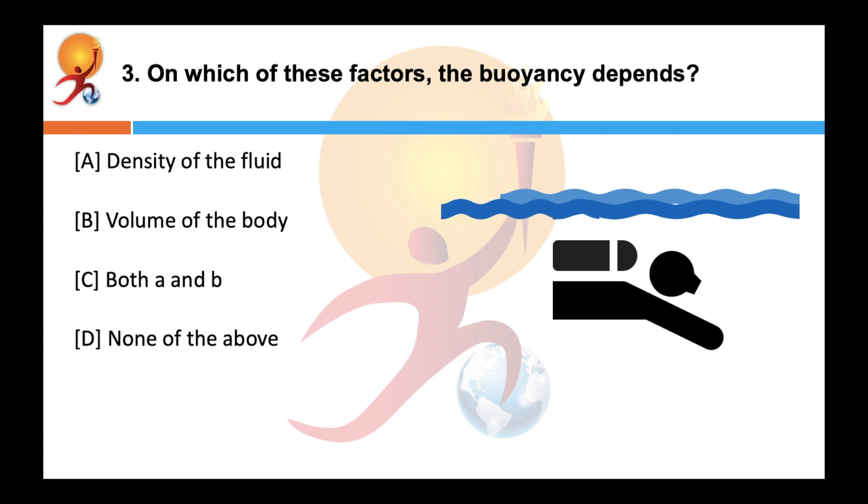On which of these factors the buoyancy depends? Correct answer is both A and B. The buoyancy depends upon the following two factors: the volume of the body submerged in the fluid and the density of the fluid in which the body is immersed.